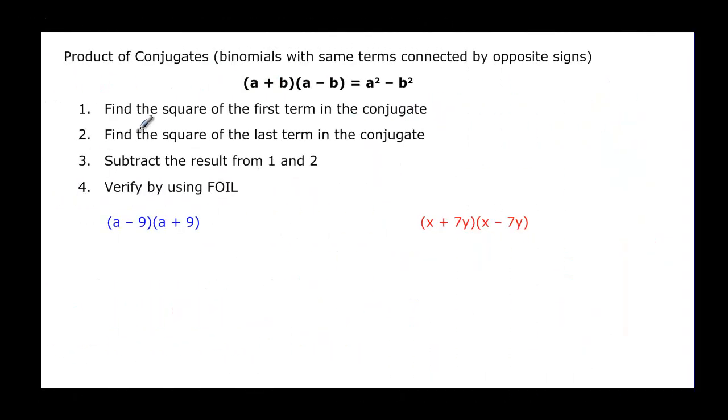Finally, we want to talk about the product of conjugates. And you may be wondering, what in the world are conjugates? Conjugates are binomials with the same terms connected by opposite signs. So I have a plus b and I have a minus b. Same terms, the only difference is the sign in the middle. And when I multiply those, I end up with a squared minus b squared. Here's my a squared. And if I do the outside terms, that's going to give me minus ab. And if I do my inside terms, that's going to be plus ab. So what do you notice? They cancel each other out. And that's why we just have the a squared minus the b squared. Positive b times negative b is going to be negative b squared.